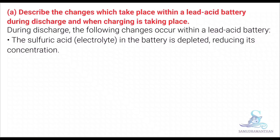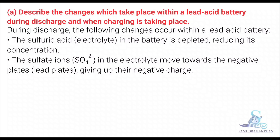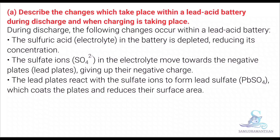The sulphuric acid electrolyte in the battery is depleted, reducing its concentration. The sulphate ions in the electrolyte move towards the negative plates, entering the lead plates and giving up their negative charge. The lead plates react with the sulphate ions to form lead sulphate, which coats the plates and reduces their surface area.